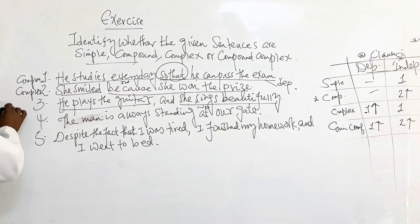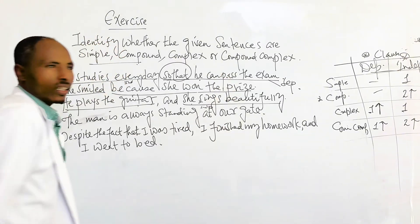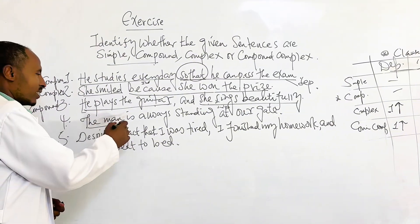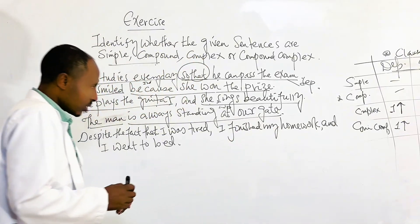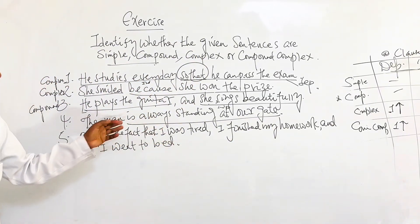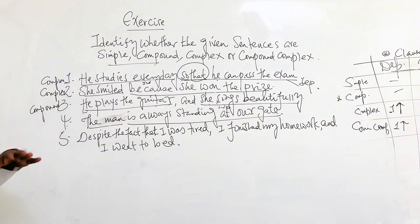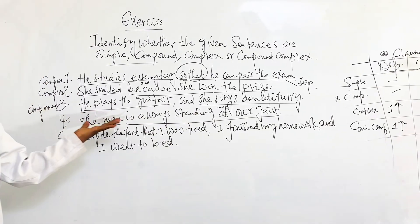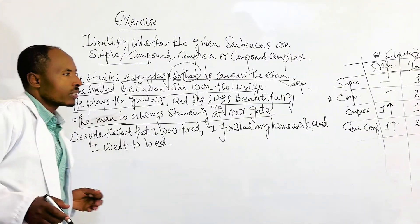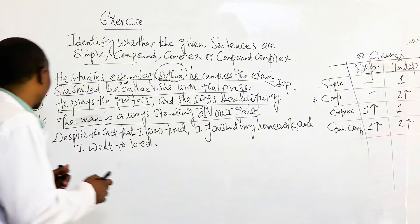'The man is always standing at our gate.' The subject is 'the man' and the whole remaining part is the predicate. We have one independent clause and zero dependent clauses — if a sentence is composed of one independent clause, it is named simple.